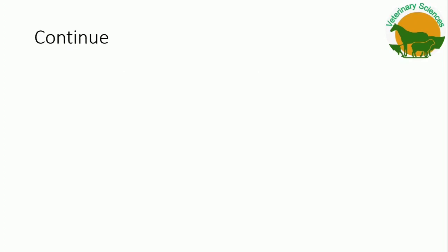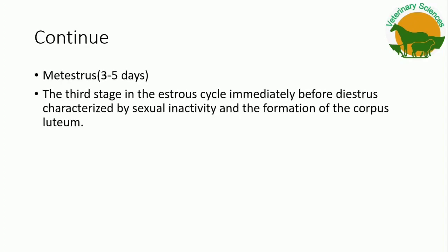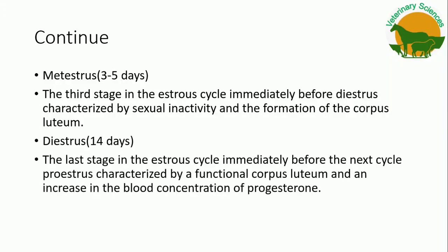Now we will talk about metestrus. It is the third stage in the estrus cycle, ranging from three to five days, coming immediately before diestrus, characterized by sexual inactivity and the formation of the corpus luteum. The last stage, diestrus, is approximately 14 days, comes immediately before the next proestrus, and is characterized by a functional corpus luteum and an increase in blood concentration of progesterone.